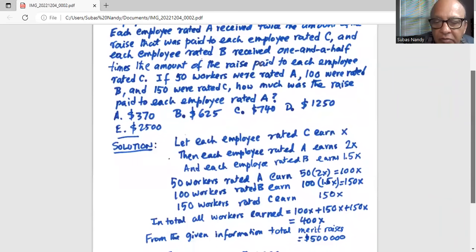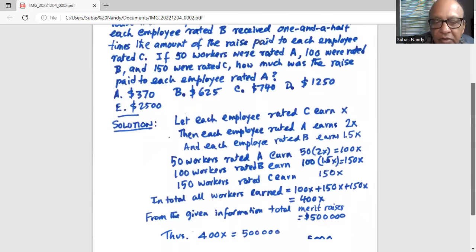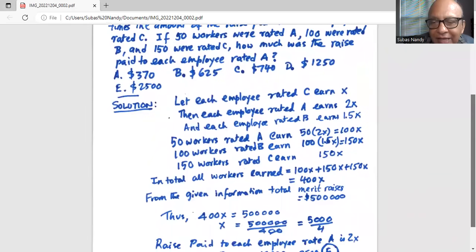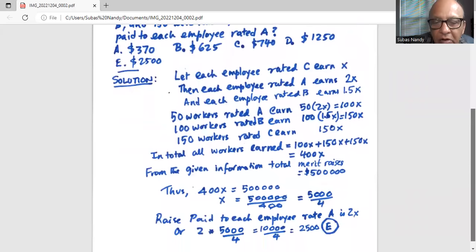From the given information, the total merit raises equaled 500,000. So 400X is equal to 500,000. So X divided by 400 on both sides, X is 500,000 divided by 400 or 5,000 divided by 4.